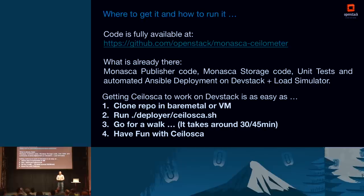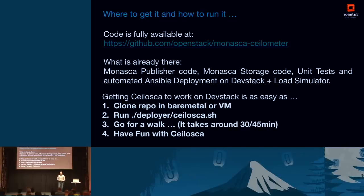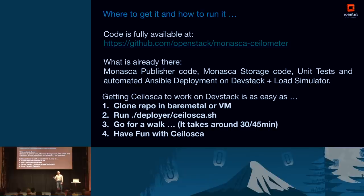To get SILOSCA, go to the GitHub at openstack/monasca-ceilometer — it's all in Python. You can find the MONASCA publisher code, the MONASCA storage driver implementation with unit tests, and an automated Ansible deployment that deploys DevStack with MONASCA and brings in the SILOSCA pieces. We also publish the load simulator code changes. Simply clone the repo, run the deployer SILOSCA shell script, and it will bring up DevStack, install MONASCA, install the SILOSCA parts, and you'll have a running SILOSCA.